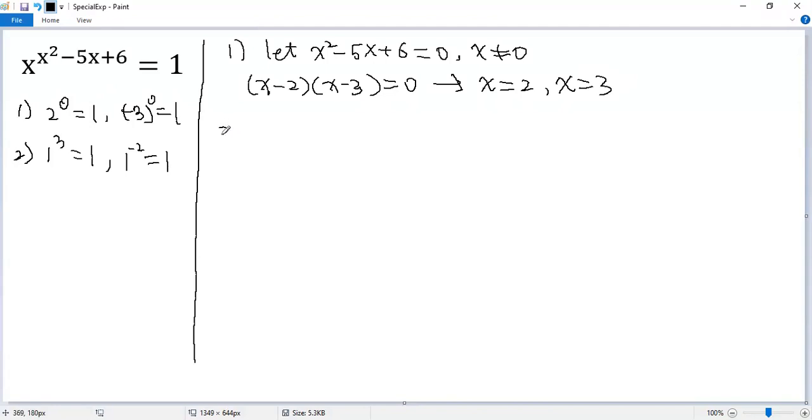So the second case would be x equals 1 should be a solution, but we can verify. So x squared minus 5x plus 6 equals 1 squared minus 5 times 1 plus 6 equals 2. Because 1 to the power of 2, yes, equals 1.